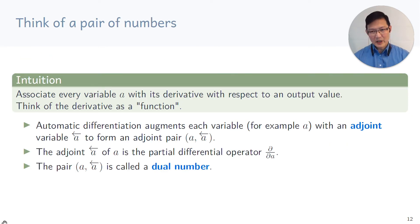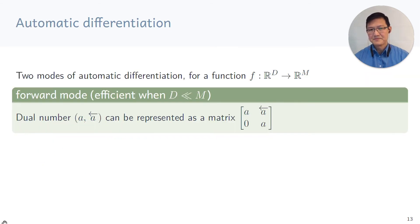So here is one way to think about automatic differentiation. The intuition is to associate every variable a with its derivative with respect to an output value. Instead of just keeping track of a, we keep track of a and its derivative. We denote this by a left pointing arrow above a. It's convenient to call this extra variable an adjoint. If this pair of a and a arrow, we can call an adjoint pair. The idea of the pair a and a adjoint is called a dual number.